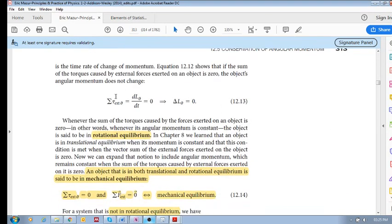Now, if the sum of the torques is equal to zero, then our angular momentum remains constant. Our delta angular momentum is zero. In the same way that if the sum of our forces is zero, then our momentum does not change.